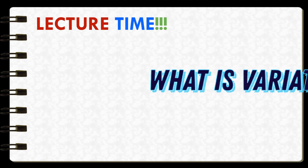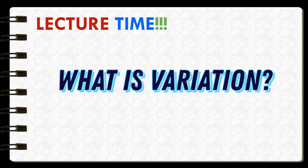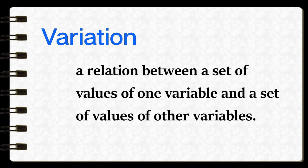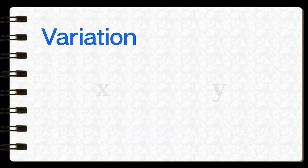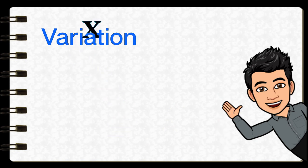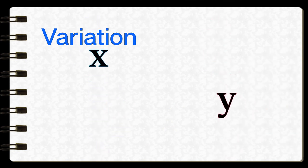So what is variation? Variation is a relation between a set of values of one variable and a set of values of other variables. Let's say that x and y are two values. Variation explains that whatever happens to x may predict what happens to y or vice versa.